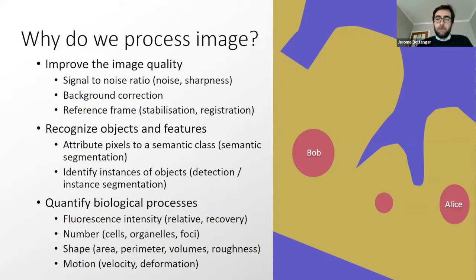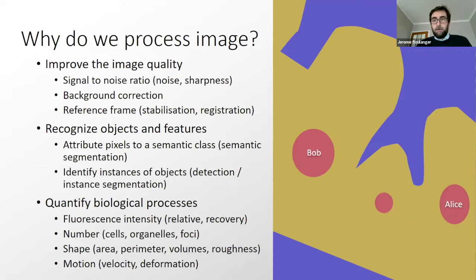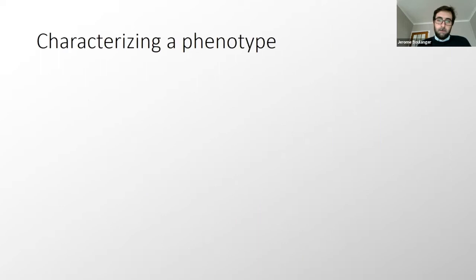Finally, we would like to quantify biological processes: measure directly the fluorescence intensity, relative intensity or recovery over time such as in fluorescence recovery after photobleaching experiments. We want to count — number of cells, organelles, bacteria inside the cell, foci. We want to extract information about shapes such as area, perimeter, volumes, roughness, surface. We can also measure motion information such as velocity, deformation, and eventually get back to information about stress or force in the sample.